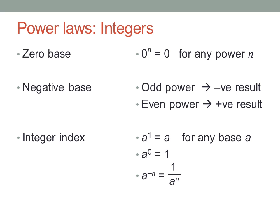Anything to the power of one is just itself. Anything to the power of zero is one. And finally, anything raised to a negative power is one over the same thing raised to a positive power. A negative power just means to divide instead of multiply.